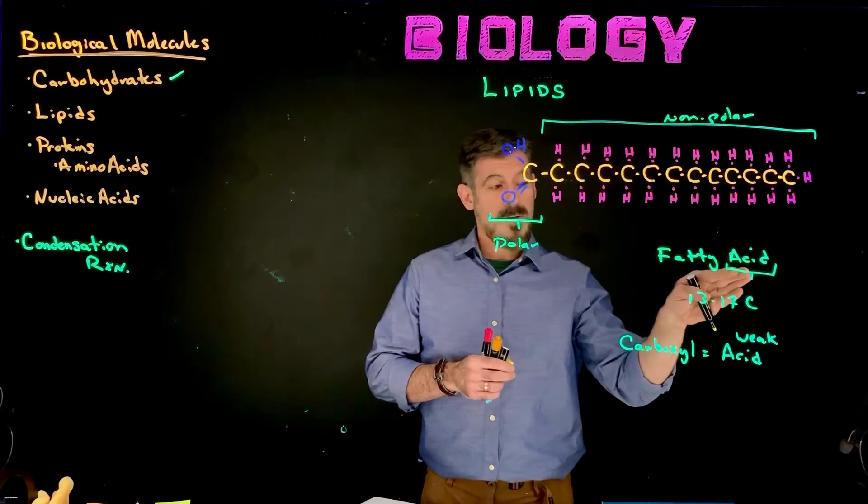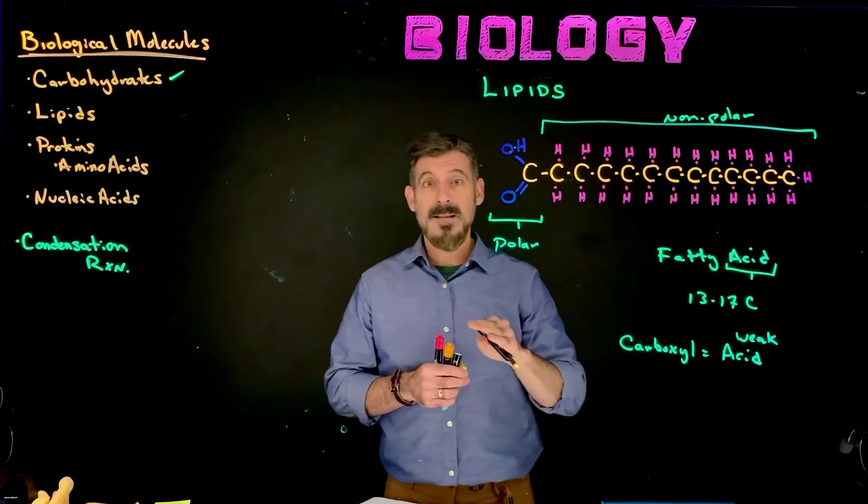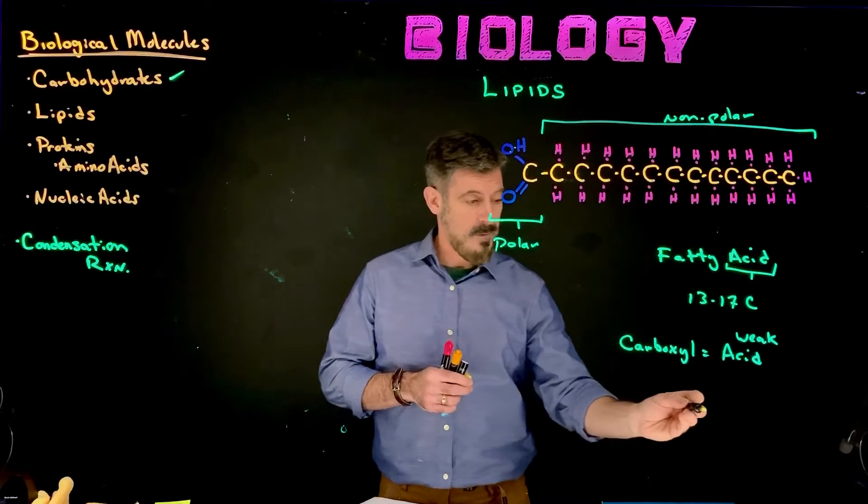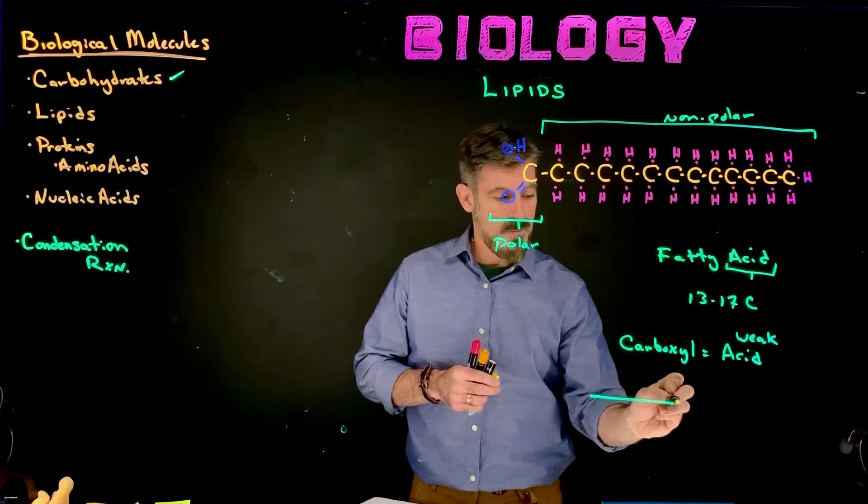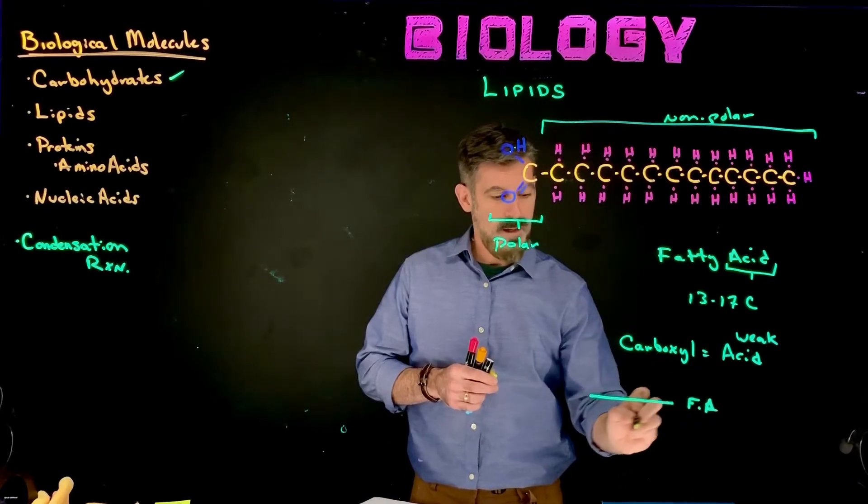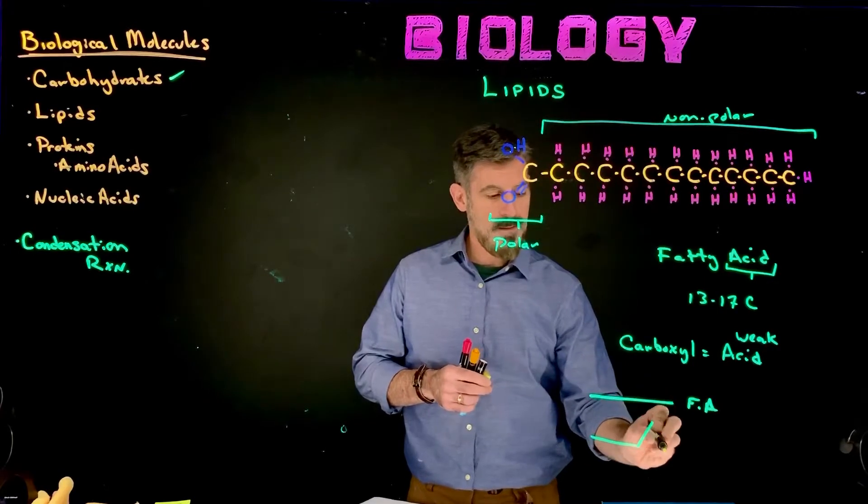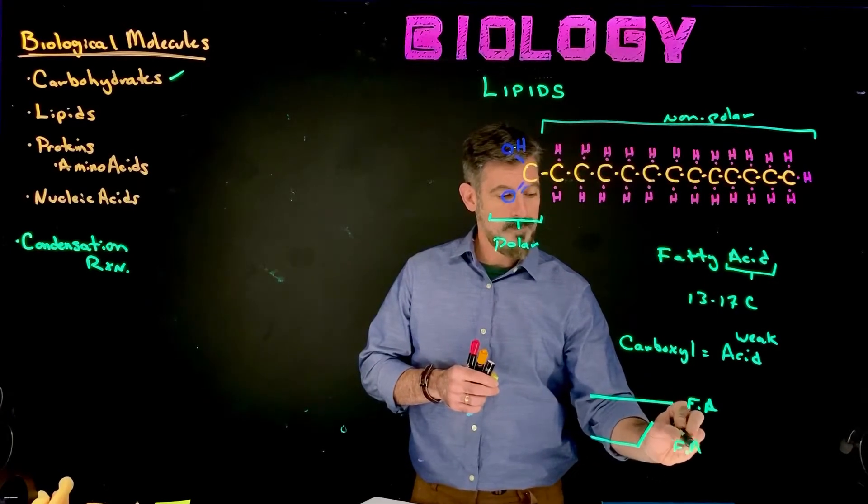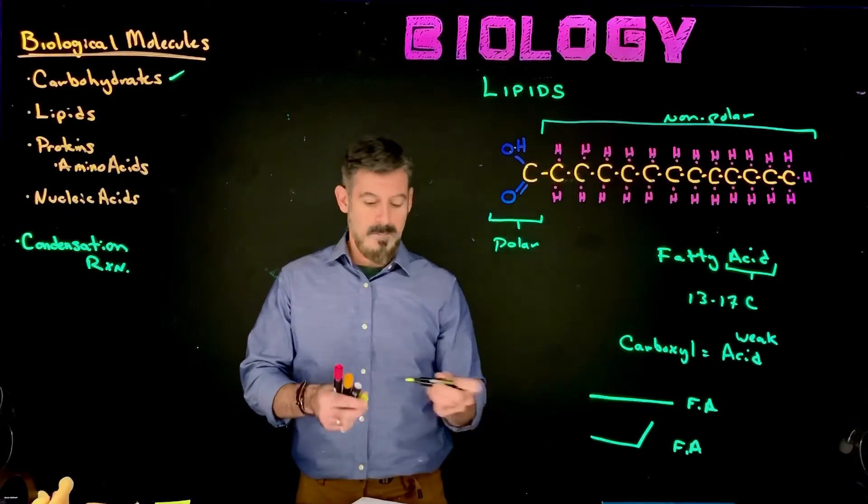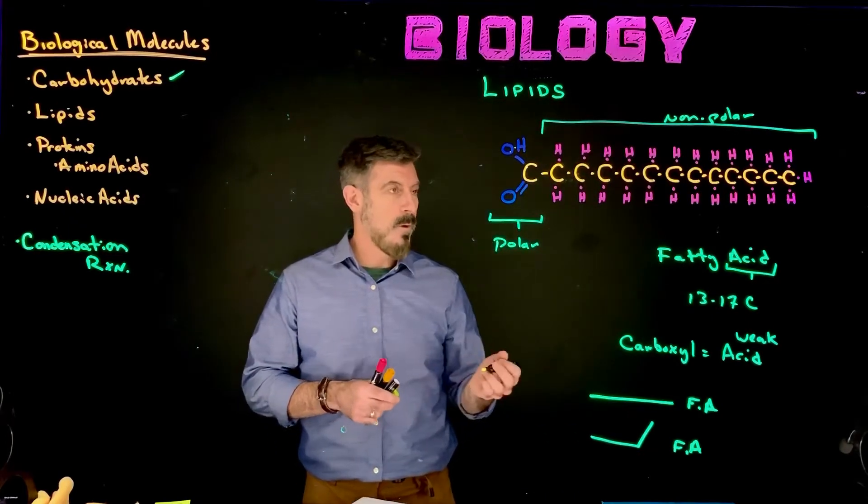In terms of the structure of a fatty acid, they tend to be linear molecules, just like I drew it here. Except, so this might be one type of fatty acid. But then there might be another type of fatty acid that's like this. Sort of a different shape. And you can ask, well, why is that?